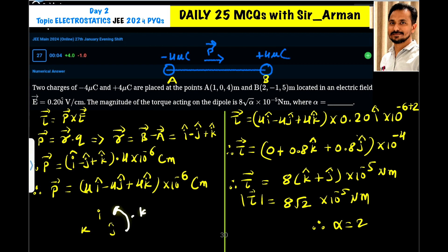So it is 4I into 0.20 I cap. Now I cross I is 0, so here it is 0. Then it is minus 4J cross I. Now J cross I is minus K, minus minus plus, so it is 0.2 into 4 is 0.8 K cap.